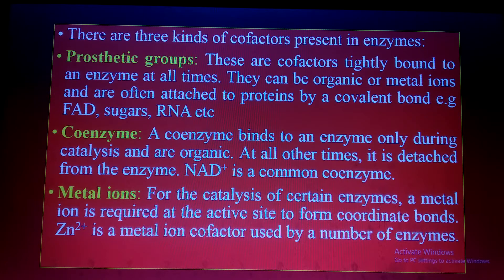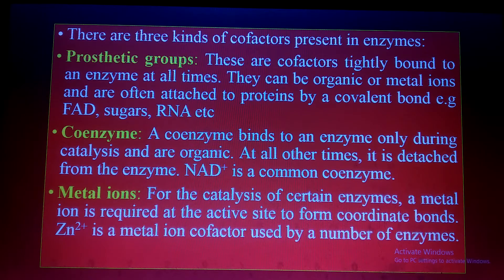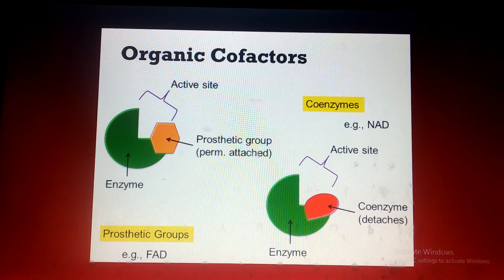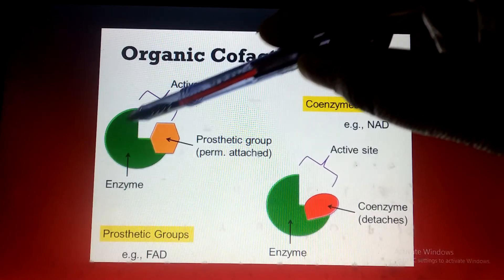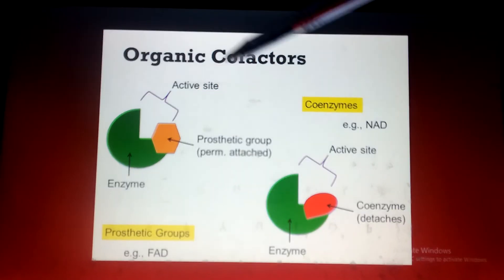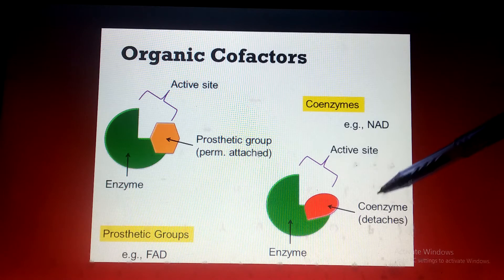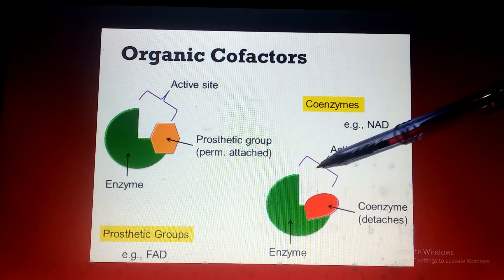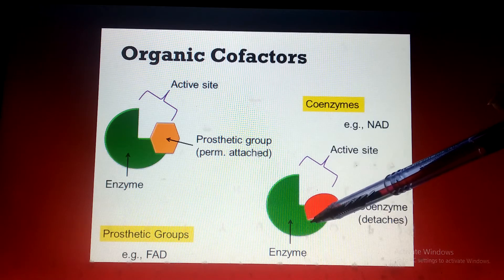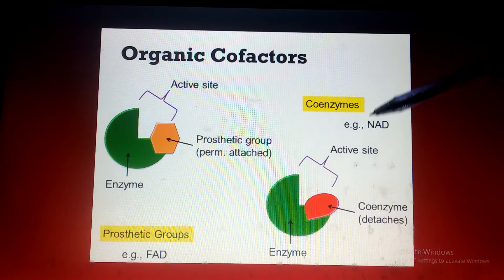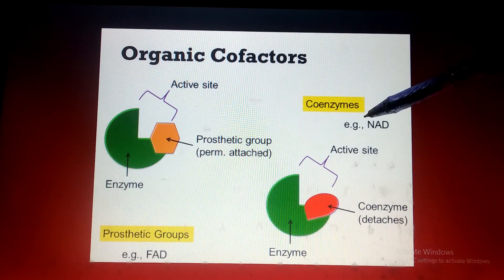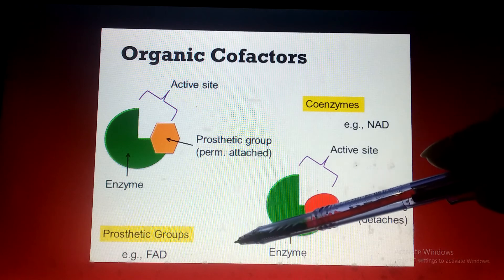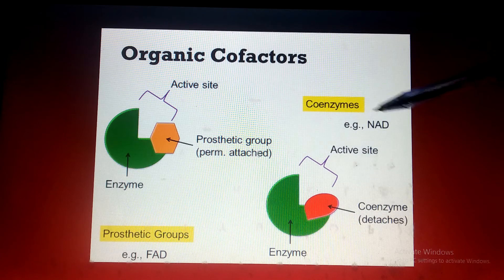The concepts of cofactors, holoenzyme, and apoenzyme should now be clear. As you can see here, the prosthetic group is attached to the enzyme making it functional. The coenzyme is shown detached from the active site — the best example being NAD as a coenzyme and FAD as a prosthetic group. All three — prosthetic groups, coenzymes, and metal ions — are types of cofactors.